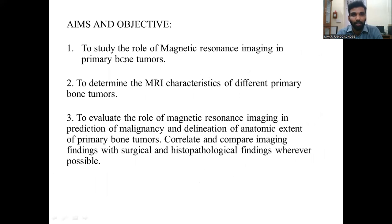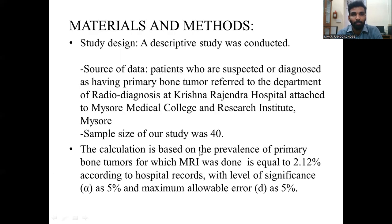Aims and objectives: to study the role of MRI in primary bone tumors; to determine the MRI characteristics of different primary bone tumors; to evaluate the role of MRI in prediction of malignancy and delineation of anatomic extent of primary bone tumors; and to correlate and compare imaging findings with surgical and histopathological findings wherever possible.